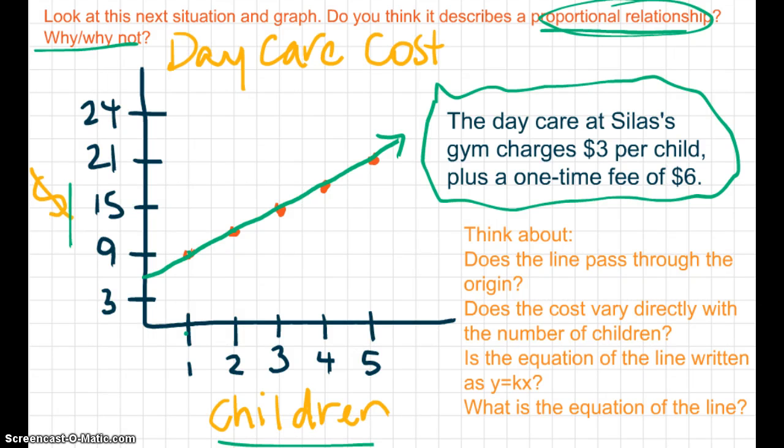is this a proportional relationship? Think about if the line passes through the origin. Whether or not the cost varies directly with the number of children. Can you write an equation in the form of Y equals KX? And what would be the equation of the line? And we will discuss tomorrow.